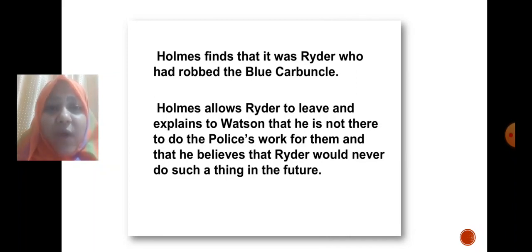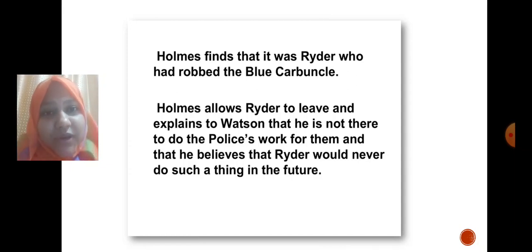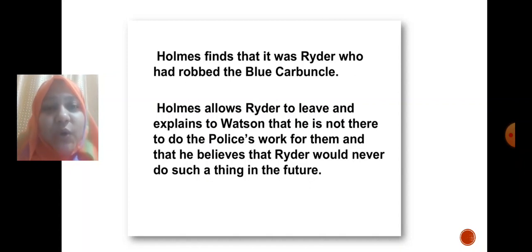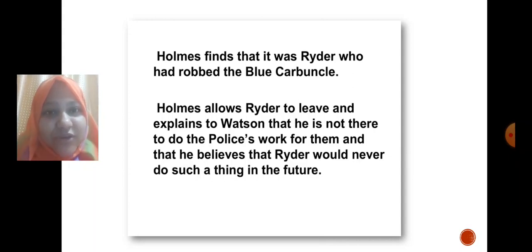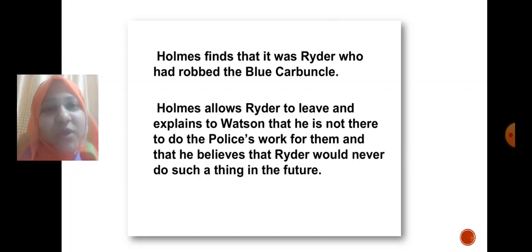Ryder was interested in the goose because he is Mrs. Oakshaw's brother. After stealing the Blue Carbuncle, he visited Mrs. Oakshaw and managed to hide the Blue Carbuncle inside the stomach of one of her geese. His sister had promised to keep the best goose for him, but the geese got shuffled. By mistake, the goose containing the Blue Carbuncle went to Mr. Breckinridge, and from Mr. Breckinridge, Mr. Henry Baker bought that goose — completely innocent and unaware of the Blue Carbuncle.